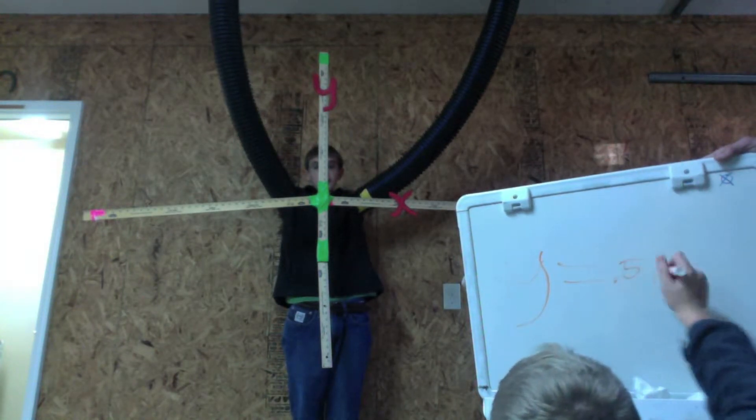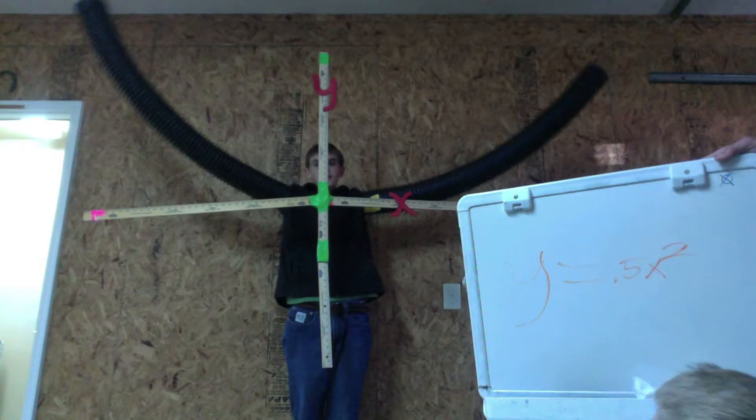y equals 0.5x squared, a vertical shrink.